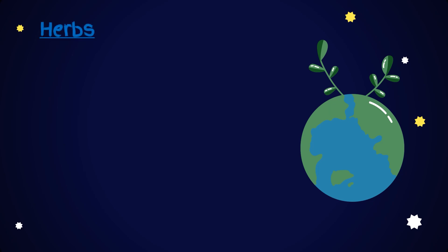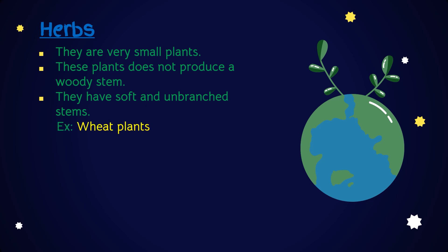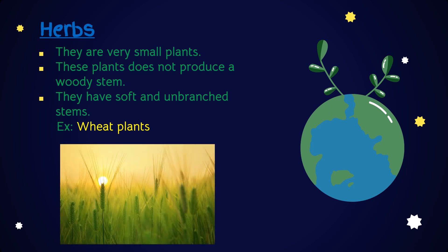What are herbs? Herbs are very small plants. They do not produce a woody stem. They have soft and unbranched stems. Examples: Wheat, Rice, Carrot, Cabbage and Ginger plants.